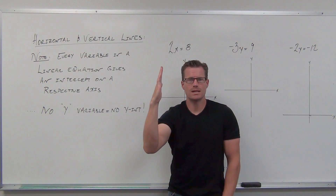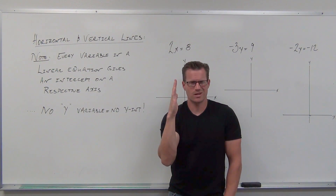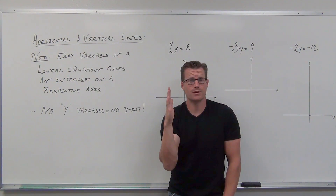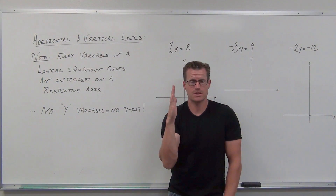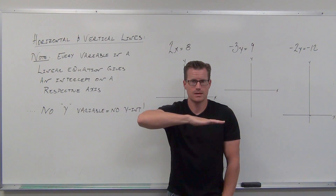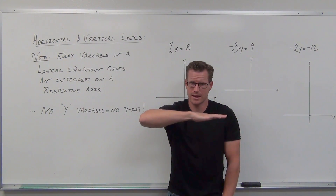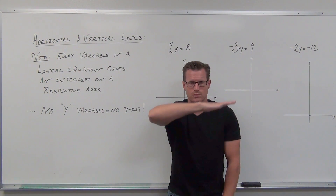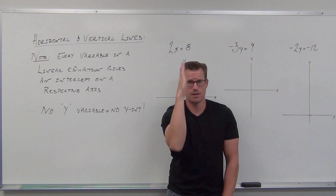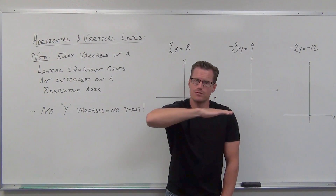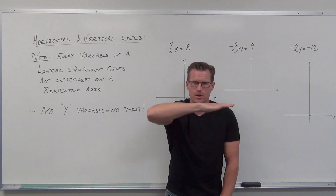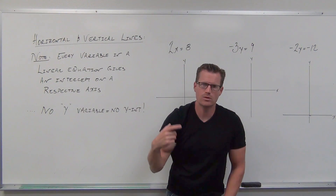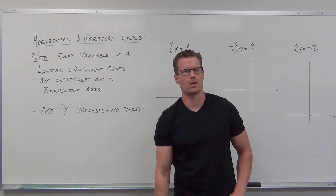What if you didn't have an x variable? That means you wouldn't cross the x-axis. So if you don't have an x variable, you are not crossing the x-axis. You'd have to be horizontal — parallel to the x-axis. You wouldn't ever cross it. That's how to interpret vertical and horizontal lines quickly.